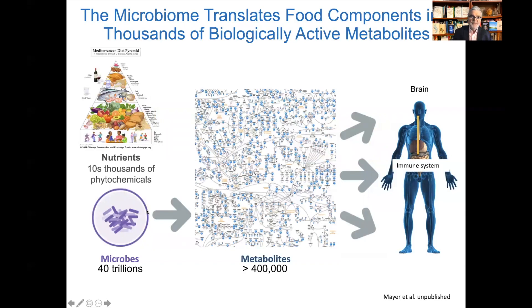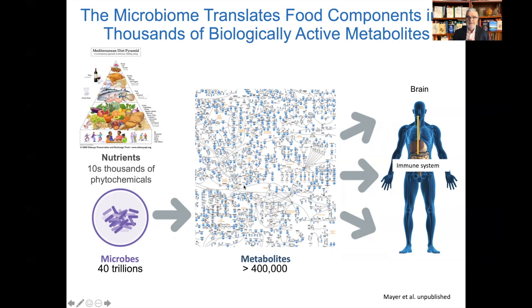These microbial organisms — trillions of them — it's been estimated that up to 100 trillion organisms are present from the stomach all the way into the large intestine. They don't just exist in isolation; they produce an enormous amount of signaling molecules, so-called metabolites, which are distributed both in the gut to various cell types and to the immune system, and throughout the body, reaching all organs including the brain.